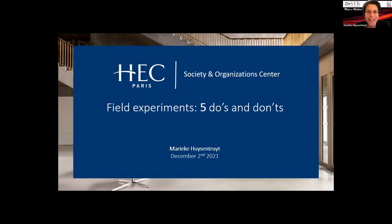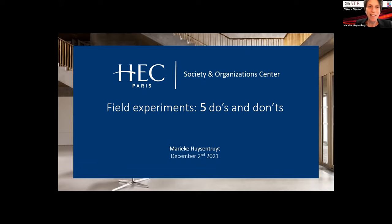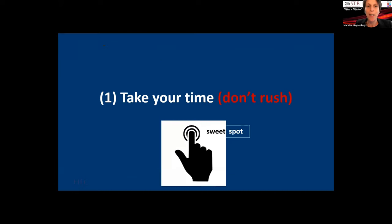Marike begins after being reminded she was muted. She says there are five do's and don'ts. The first connects with the timelines Vanessa described: when entering a discussion with a potential partner organization, take your time and don't rush. Finding that sweet spot means understanding the context and the field — what the partner organization's problem or priority is, what their constraints are, and what strikes you as genuinely interesting — then going back and diagnosing that problem through your own research lens.